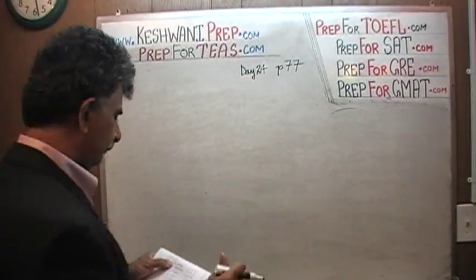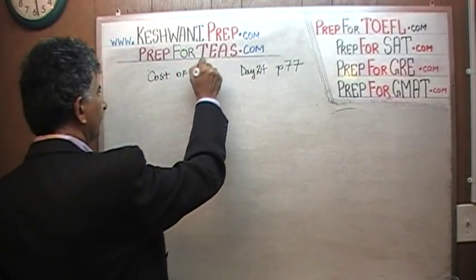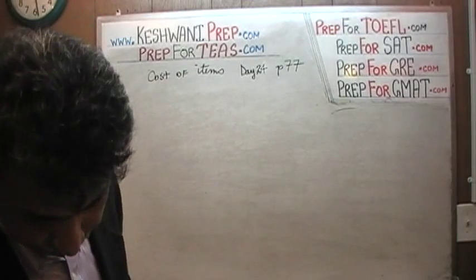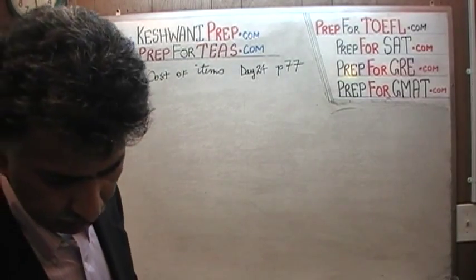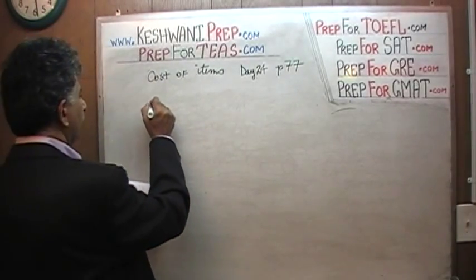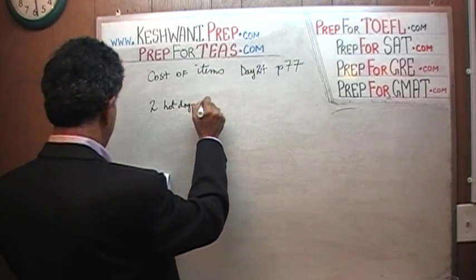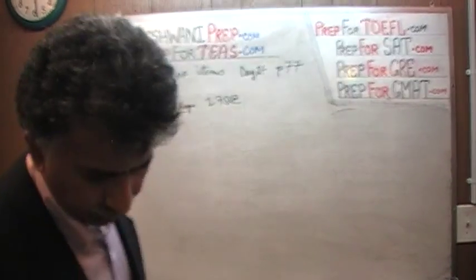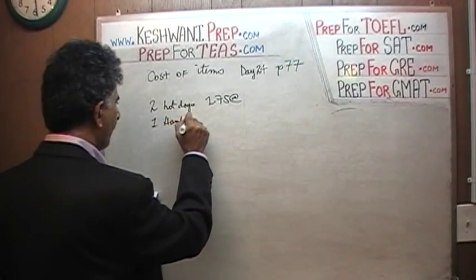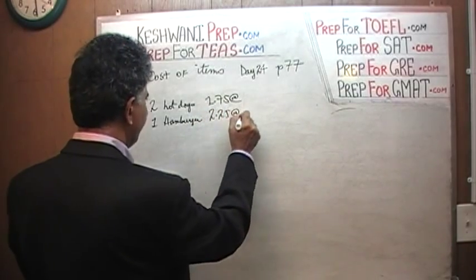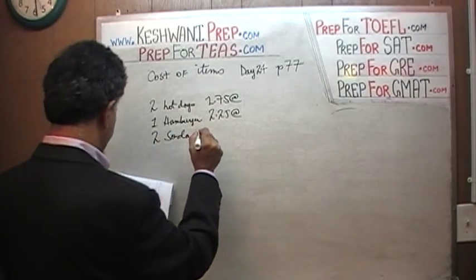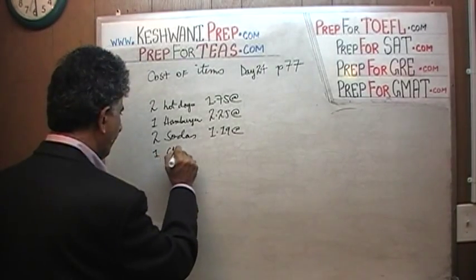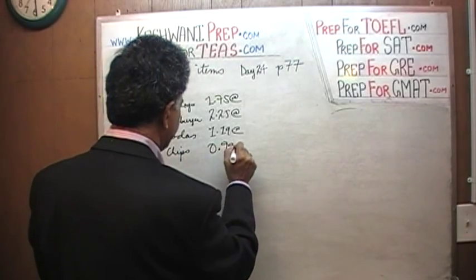Number 2 — again we have cost of items. It looks like a menu at the deli, and a customer orders certain items; our job is to figure out the cost. He buys 2 hot dogs at $1.75 each. He buys 1 hamburger at $2.25 each. He buys 2 sodas at $1.19 each. He buys 1 bag of chips for $1.99.